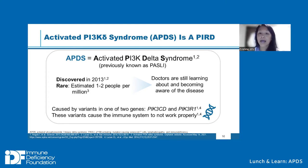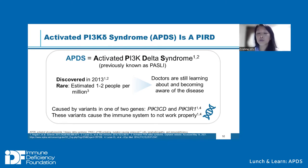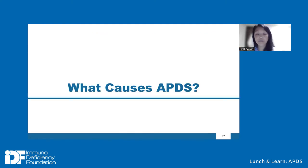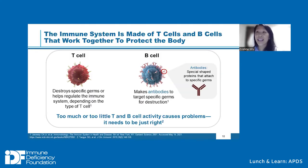APDS is caused by variants or changes in one of two genes: either PIK3CD, which results in APDS Type 1, or PIK3R1, which results in APDS Type 2. We'll talk about how variants in either of these genes cause the immune system to not work properly and therefore cause the symptoms we see with APDS.